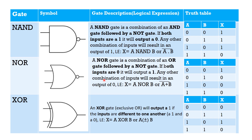Next is NOR gate. A NOR gate is represented like this. A NOR gate is a combination of an OR gate followed by a NOT gate. If both inputs are 0, it will output a 1. Because the OR gate turns ON if any input is 1, and since we NOT the OR, if we get any 1 in our inputs we turn OFF. So only when both inputs are 0 will the output be 1. The logical expression for NOR gate is A NOR B, represented as A+B with a bar.